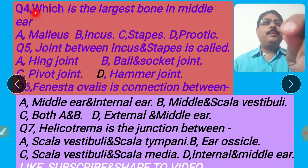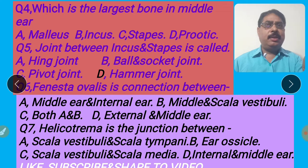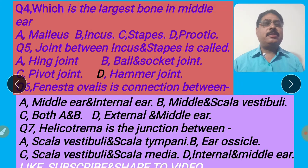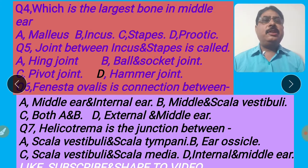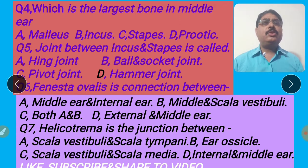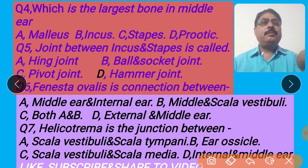Next question, question 4: Which is the largest bone in the middle ear? There are 4 options: A, malleus; B, incus; C, stapes; D, prutic. MIS — 3 ear ossicles. Malleus is the largest ear ossicle in the middle ear. Incus is the second largest bone in the middle ear. Stapes is the smallest bone of the body. So the right answer is option A, malleus. I shall click option A for the right answer.